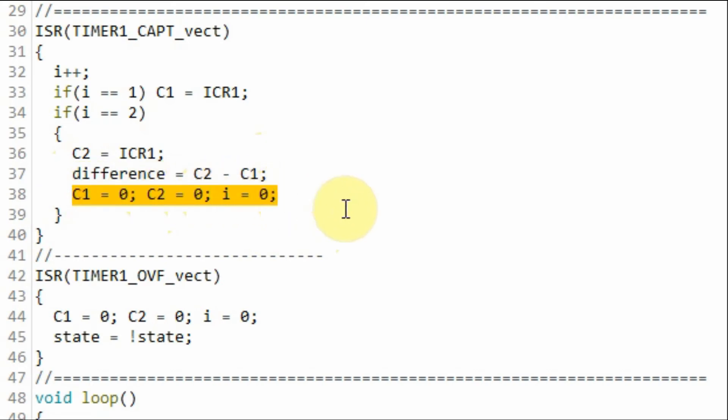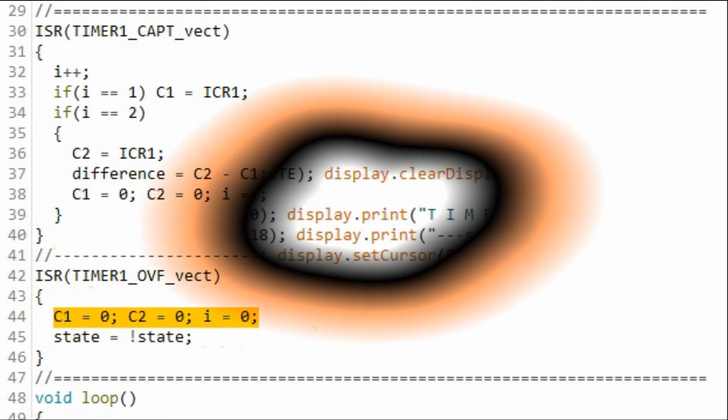To ensure that time measurement is performed between two consecutive overflows, when an overflow interrupt occurs, this ISR is executed where we reset the values so that we are ready for the next calculation.